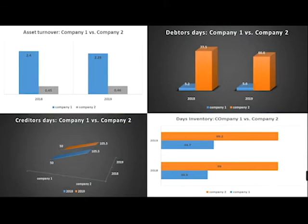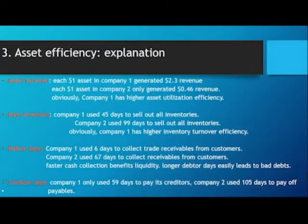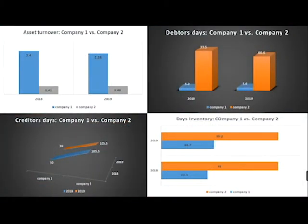Company one has a higher asset utilization efficiency. For inventory days, company one uses 45 days to sell out all inventories, while company two uses 99 days to sell out all inventories.